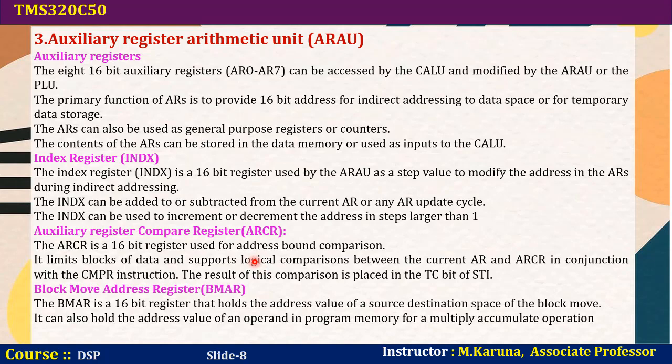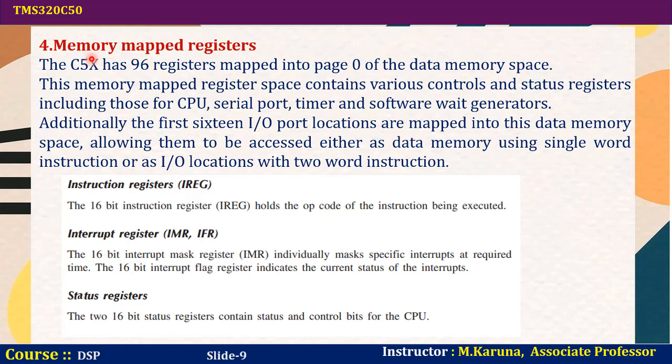The compare register is used for performing comparison operations. After performing the comparison, the result is placed in the TC (test or control flag) bit of the status flag register. The block move address register (BMAR) is a 16-bit register used to hold the address value of a source or destination space of the block move, and can also hold the address value of an operand in program memory for a multiply-accumulate operation.